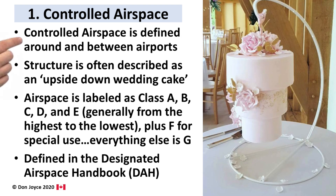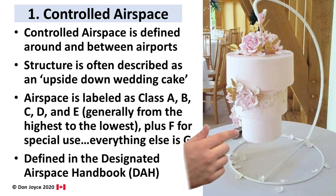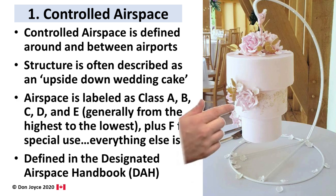Controlled airspace is defined around airports and the air traffic routes between them. These are the areas where aircraft movements are being monitored and controlled by control towers. The structure of airspace is often described as an upside-down wedding cake because the drum-shaped classes of airspace increase in size as you go higher above the ground.